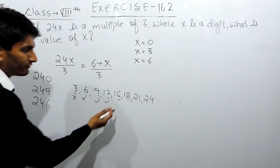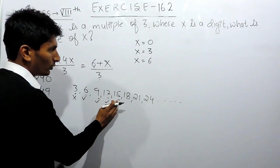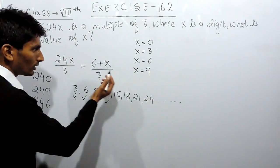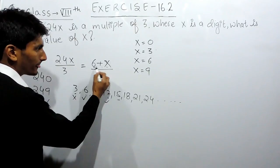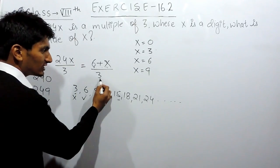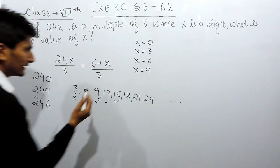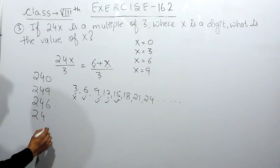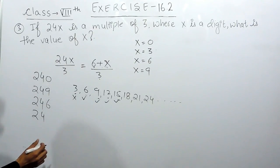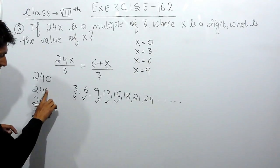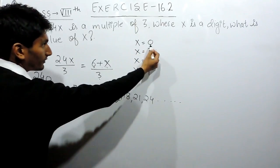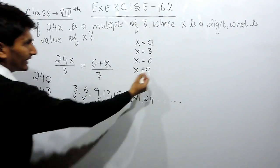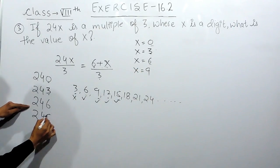Now if I have to make the sum equal to 15, I substitute x equals 9, so 9 plus 6 becomes 15, which is divisible by 3. So the values of x are: first 0, next 3, then 6, and last 9.